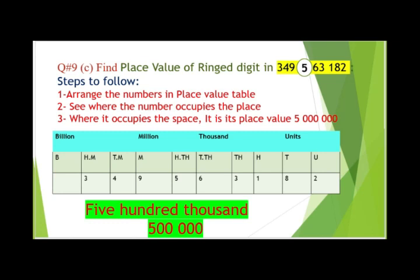Our ringed digit is five, and you can see that it takes the place at the hundred thousands. So its place value is 500,000. We write it here: 500,000.